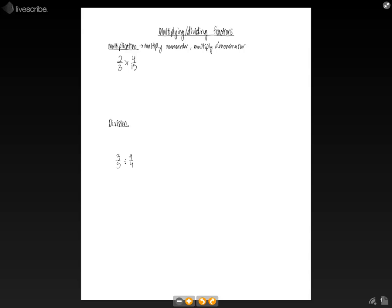If we look at this example we have 2/3 times 4/15, and when you multiply fractions you can just go ahead and multiply the numerators and multiply the denominators. So this will become 2 times 4 in the numerator and 3 times 15 in the denominator, which will just give us 8/45.